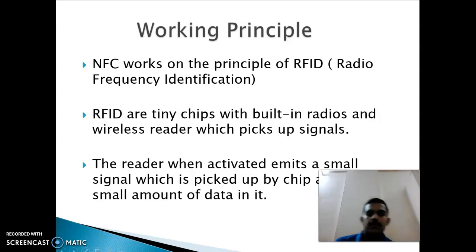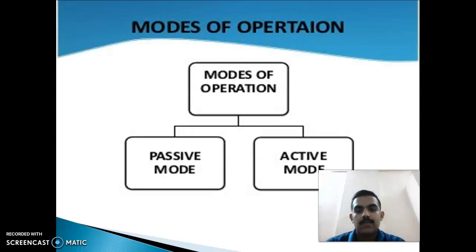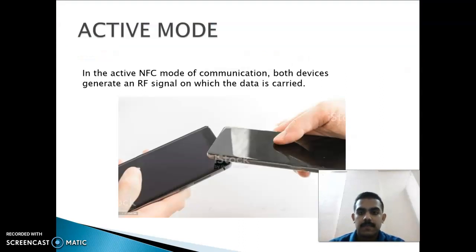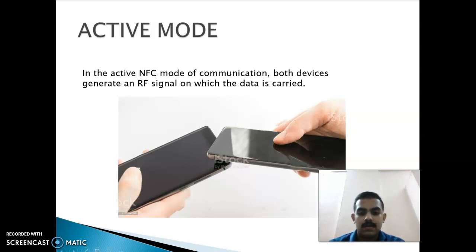Next we are going to see the different modes of operation. There are basically two modes: passive mode and active mode. In active mode, both devices generate an RF signal on which the data is carried. In simple words, you just bring two devices close to each other and transfer the data.